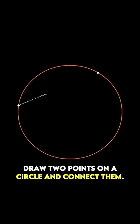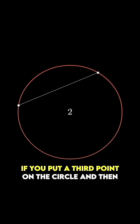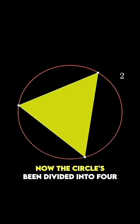Draw two points on a circle and connect them. Obviously this divides the circle into two different regions. If you put a third point on the circle and then draw lines connecting it to the previous points, now the circle's been divided into four separate regions.